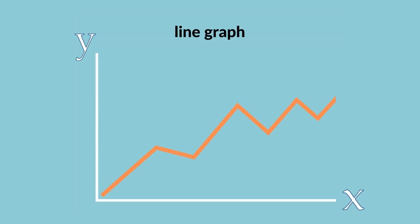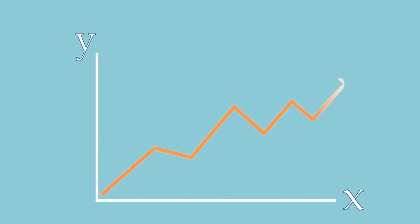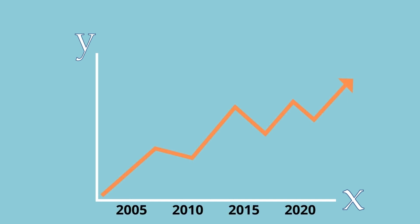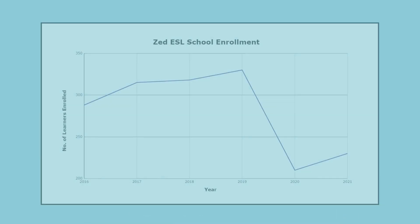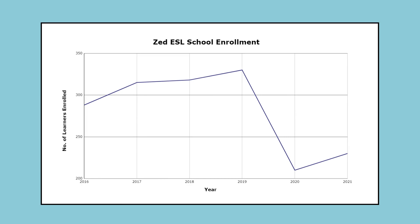A line graph is used to show changes over time. Data is displayed as a continuous line. In line graphs, time intervals are always represented horizontally. This chart shows the student enrollment over five years at ZESL School.